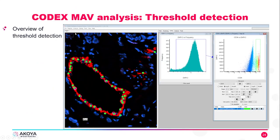This is an example of Codex MAV where we're thresholding. You can see a tissue that's been stained with CD34 in red, and I've detected where there are CD34 positive cells—that detection is apparent because of the green dots which are overlaying the cell nuclei.